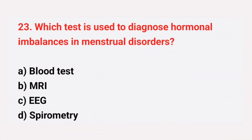Question number 23: Which test is used to diagnose hormonal imbalances in menstrual disorders? The right answer is option A, blood test.